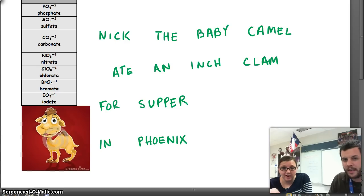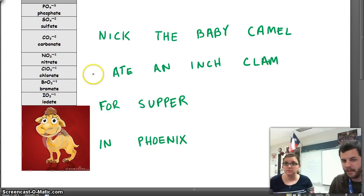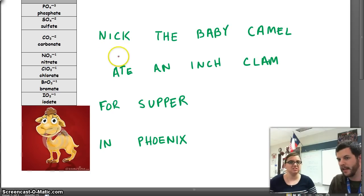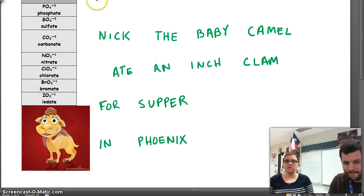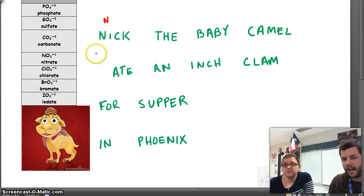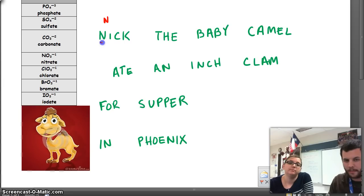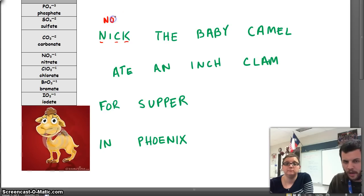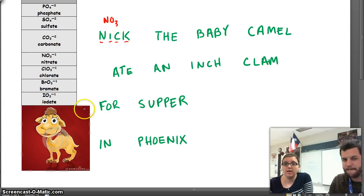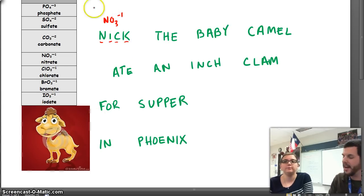This is going to help us with our polyatomic ions. Nick starts with the letter N, so that goes along with nitrate, because nitrate starts with N. And nitrate starts with what element? Nitrogen. So let's write down nitrogen. Next we need to put some oxygens. How many consonants does Nick have? Three consonants — that's how many oxygens you need, so O3. How many vowels? One vowel — that's your charge, but with a negative: negative one. And so that's nitrate.